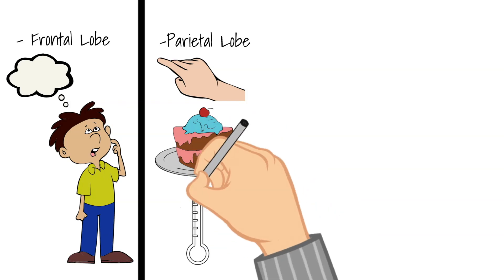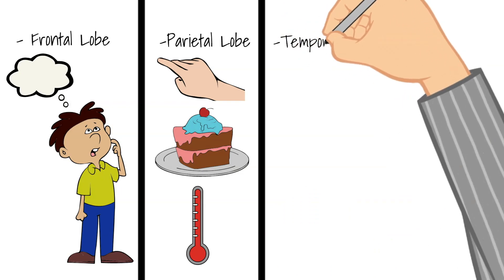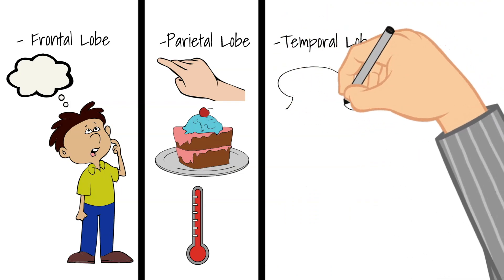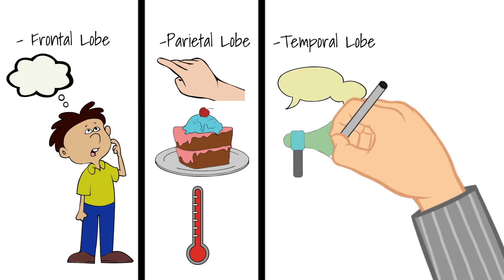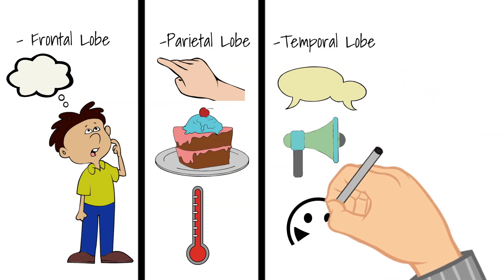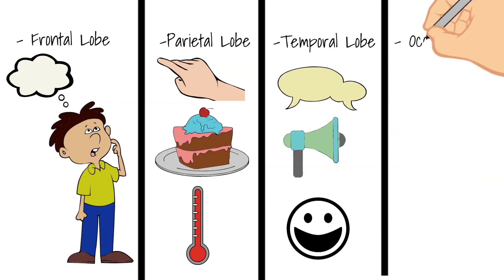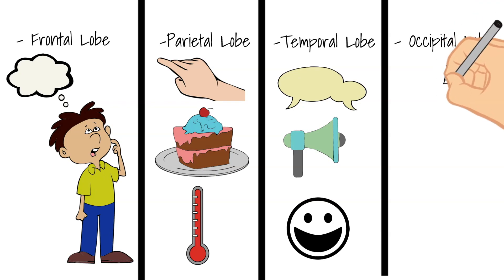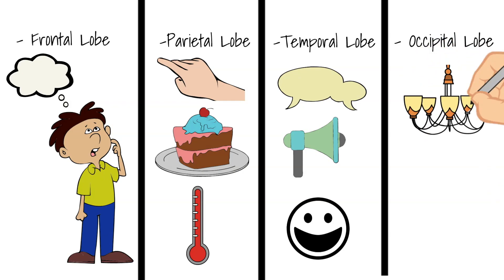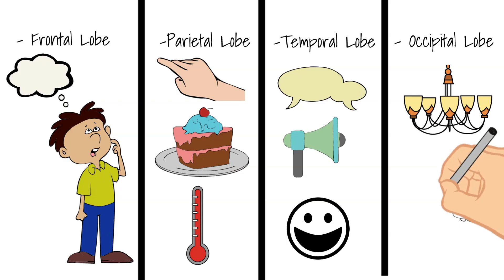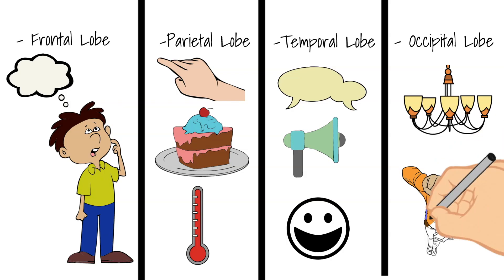The parietal lobe is located behind the frontal lobe. Next is the temporal lobe. This lobe helps us to understand language as well as sounds, and recognize objects and faces. It is located near the ears. And the last lobe in the cerebrum is the occipital lobe. This lobe processes light and other information from your eyes and lets us know what we're seeing. It is located in the back of your brain.